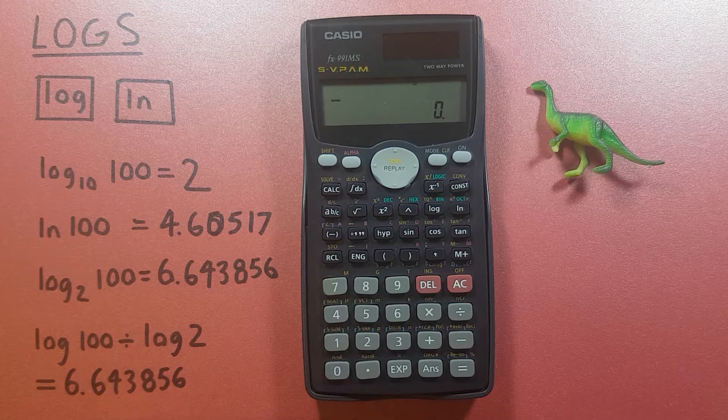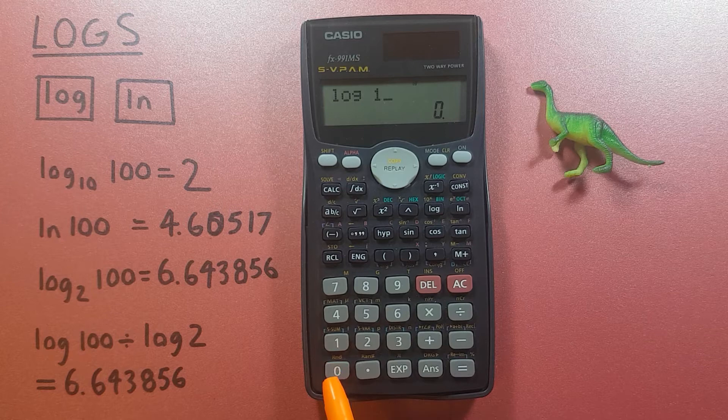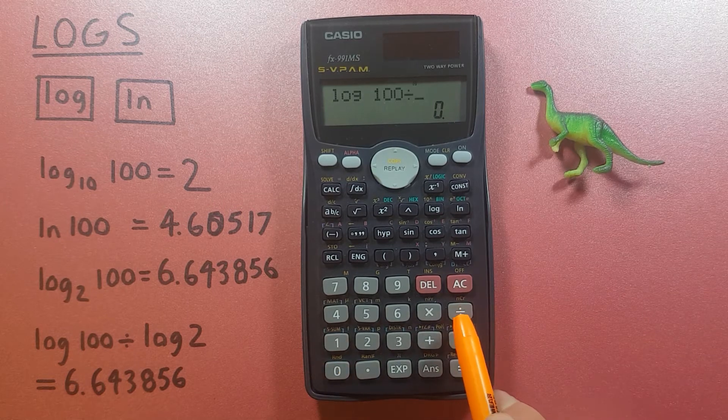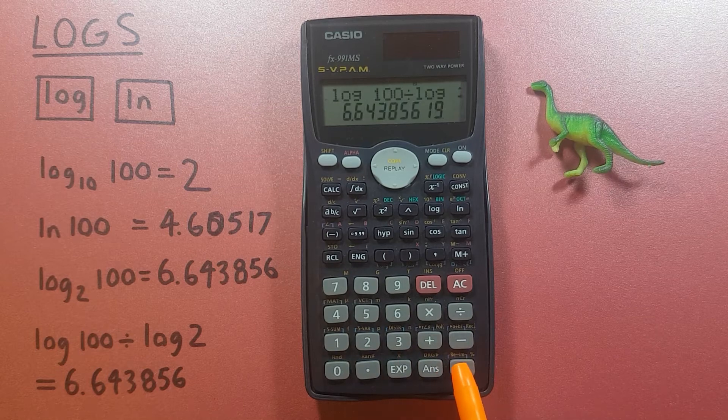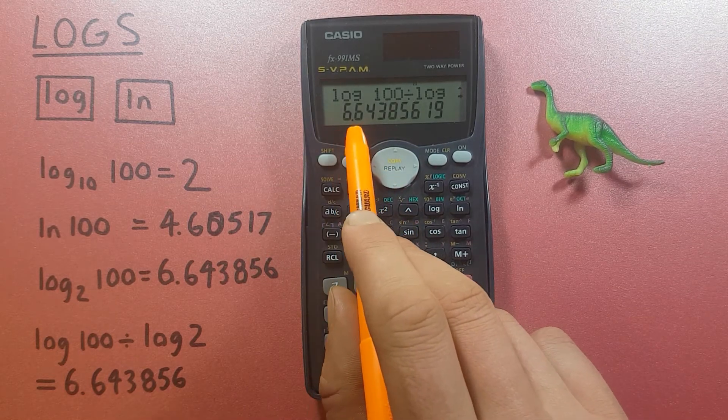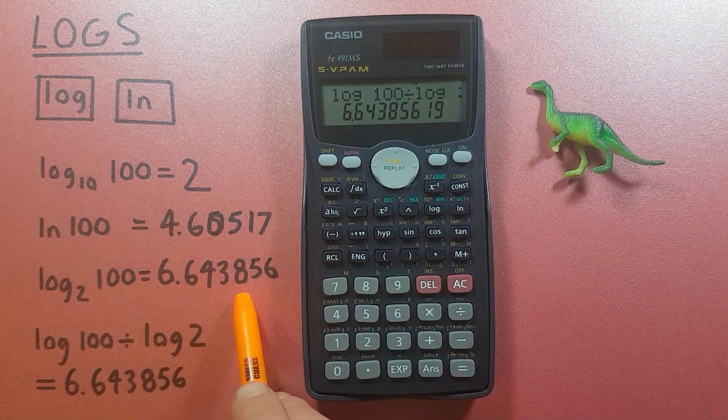So to find the log base 2 of 100 we place log 100 on the screen divided by log 2 equals and you can see we get 6.643856 etc, which is correct.